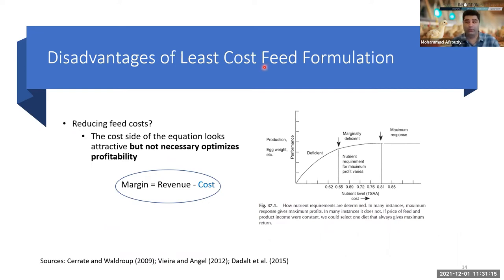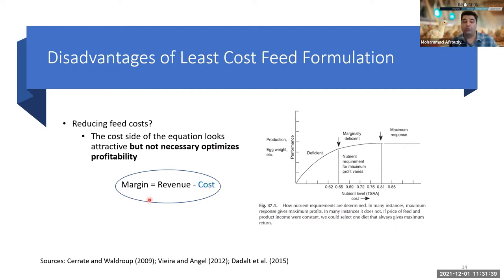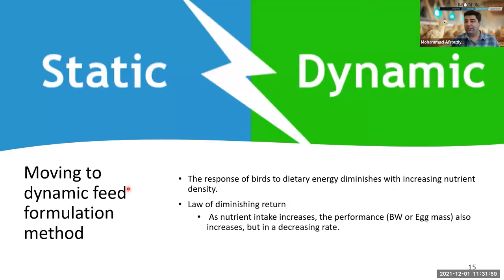Let's talk about disadvantages of least cost feed formulation. It's a great and common method, but its most important disadvantage is that reducing feed cost is not everything. The cost side looks attractive, but it doesn't necessarily optimize profitability. The profit formula is revenue minus cost — when you minimize cost, you're only doing part of the job. You've minimized cost but not maximized profit. That's why we need to move from static to dynamic feed formulation.